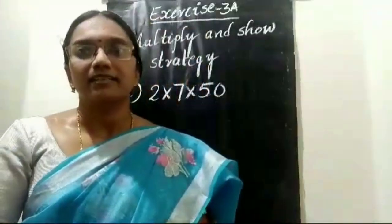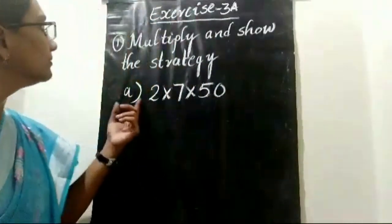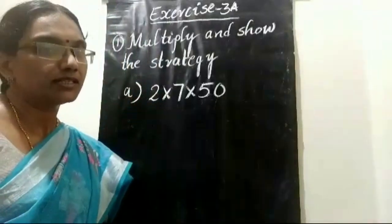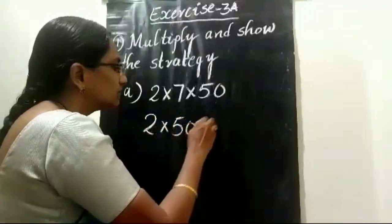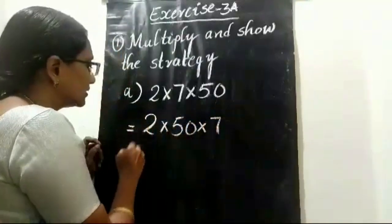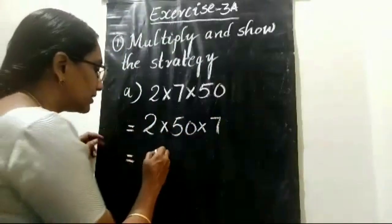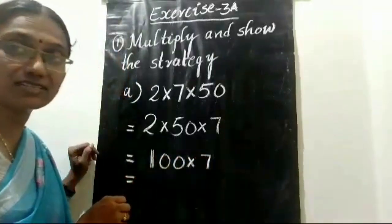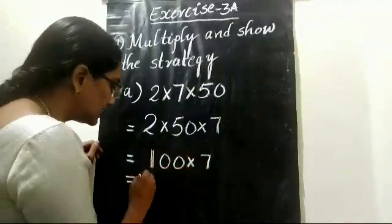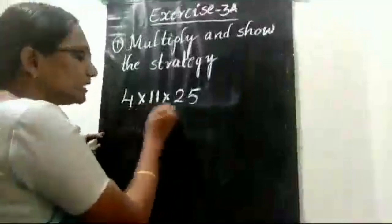Let us solve multiplication sums in exercise 3a. Multiply and show the strategy. Here: 2 into 50 into 7. Take 2 and 50 first: 2 fifties is 100. Write 100 into 7: 100 sevens is 700. We can also write it as 7 followed by two zeros.